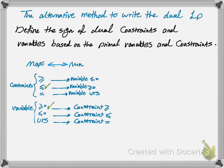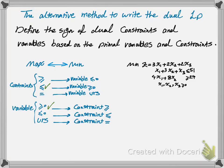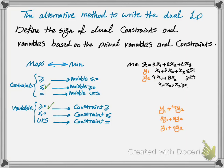Now let's look at one example to see how we can use this relationship to skip the normalization step in writing the dual. Consider this linear programming problem. The first step is to write the equations. For each constraint, associate one variable — y1 and y2. Then for each column write one equation. The first equation is y1 multiplied by 1 plus y2 multiplied by 4. The second equation is y1 multiplied by 3 plus y2 multiplied by 8. And the third equation is y1 multiplied by 1 plus y2 multiplied by 0. Because the 0 multiplied by y2 in the third equation can be eliminated, we can avoid writing it altogether.